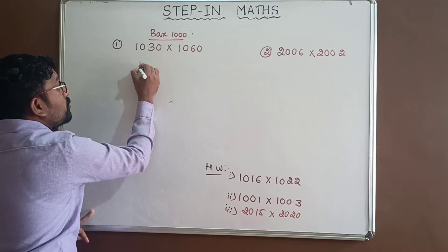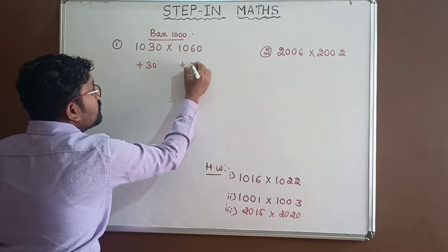1030, this is 30 more than 1000. And 1060, this is 60 more than 1000.